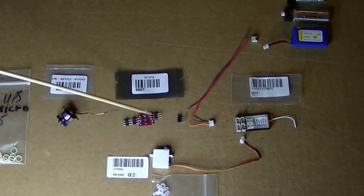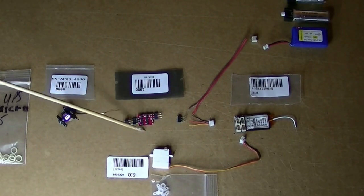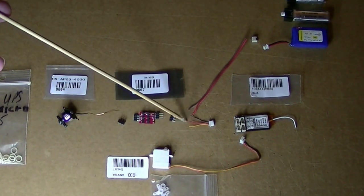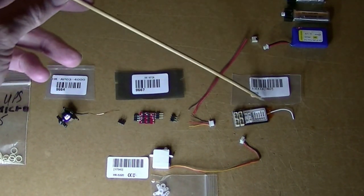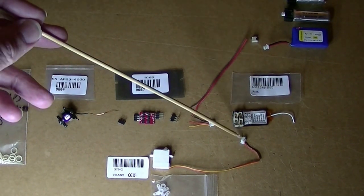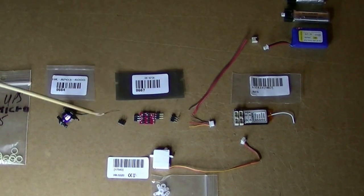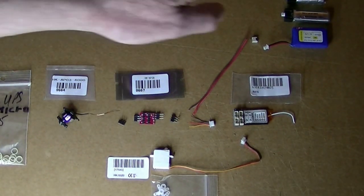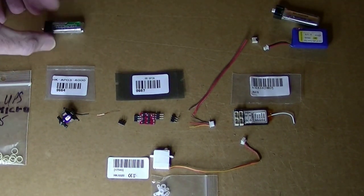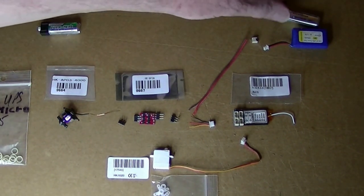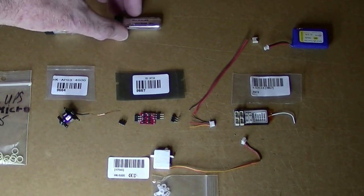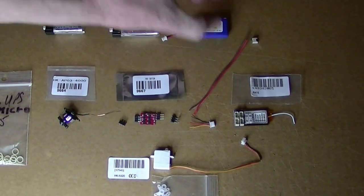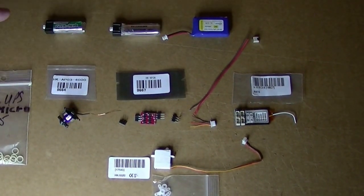Then the Hobbyking XP3A which is a 3 amp ESC and it comes with two connectors. It's going to be using the Hobbyking 415 4-channel receiver. All this will work off a one-cell battery - the batteries that can be used are the Turnigy Nano Tech 160, the Hyperion 160, or the Hyperion 240. They all have the same connector on the end.